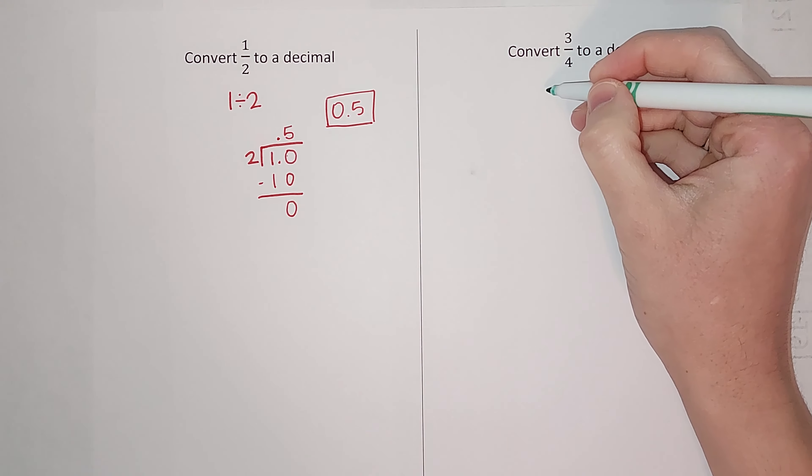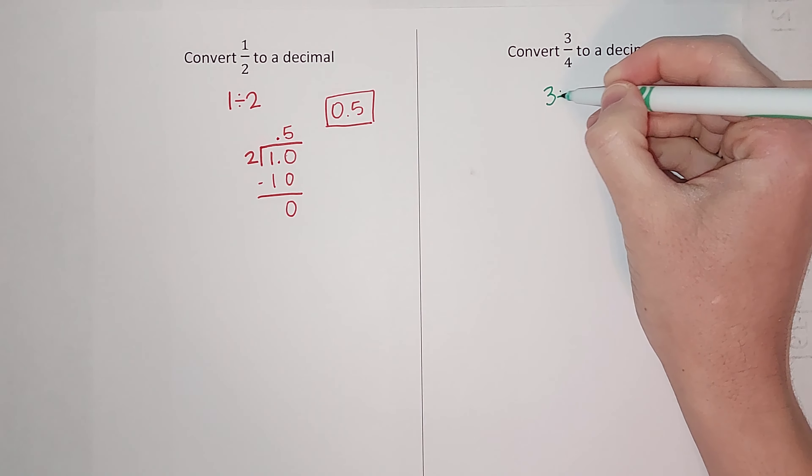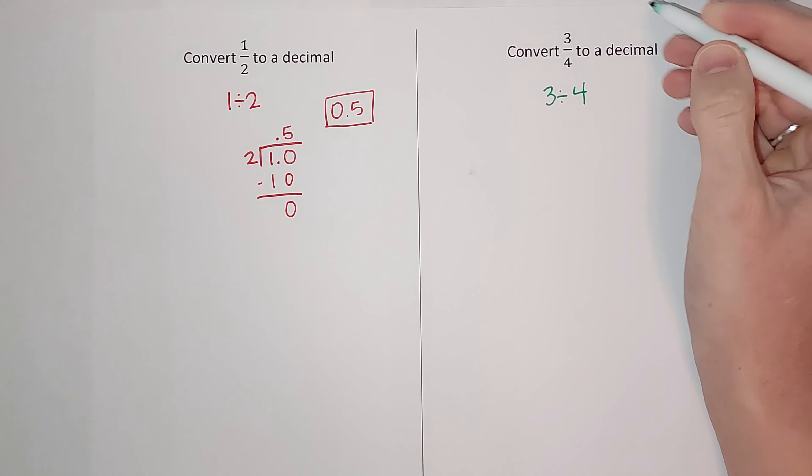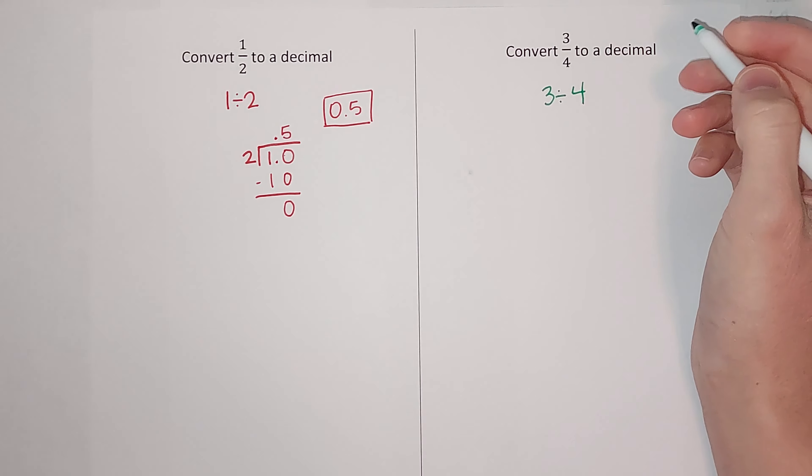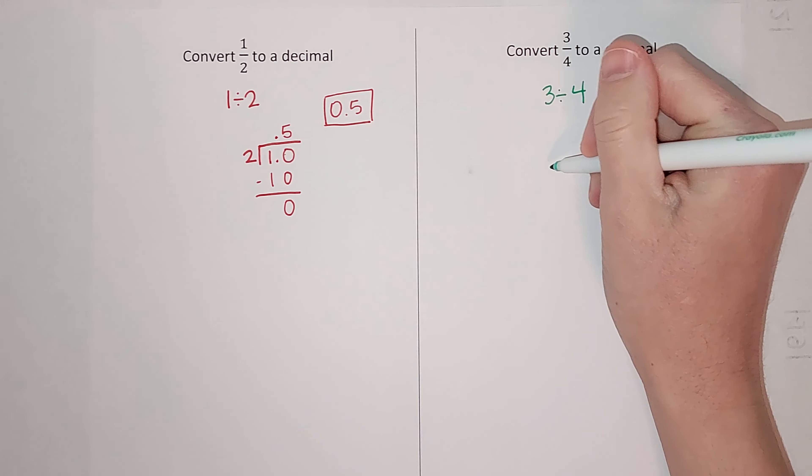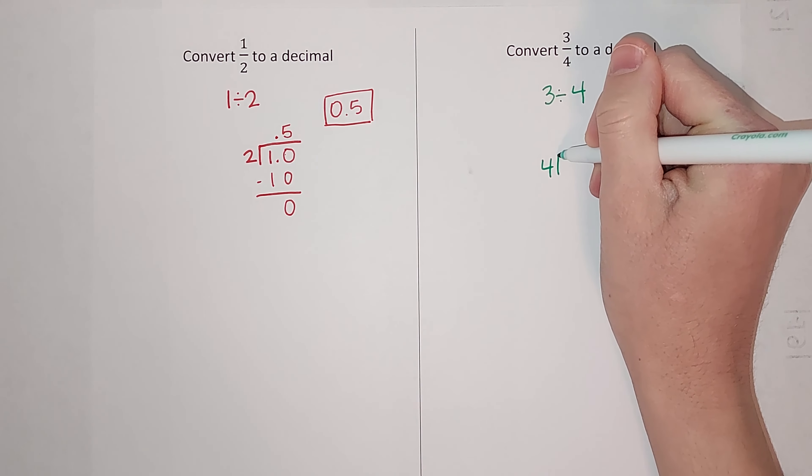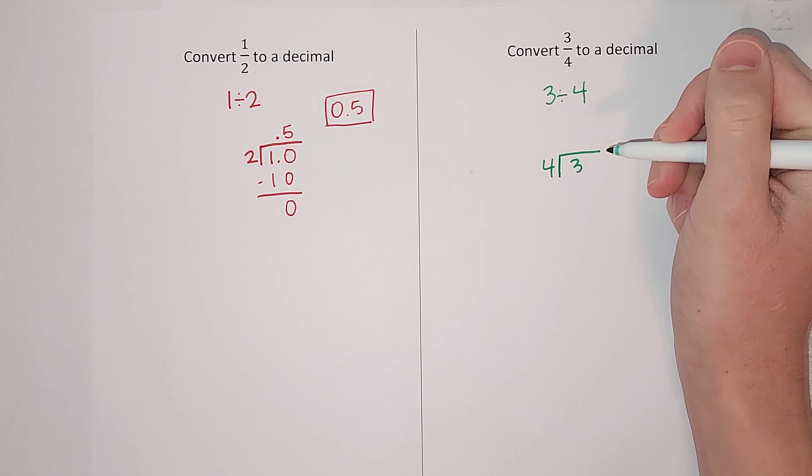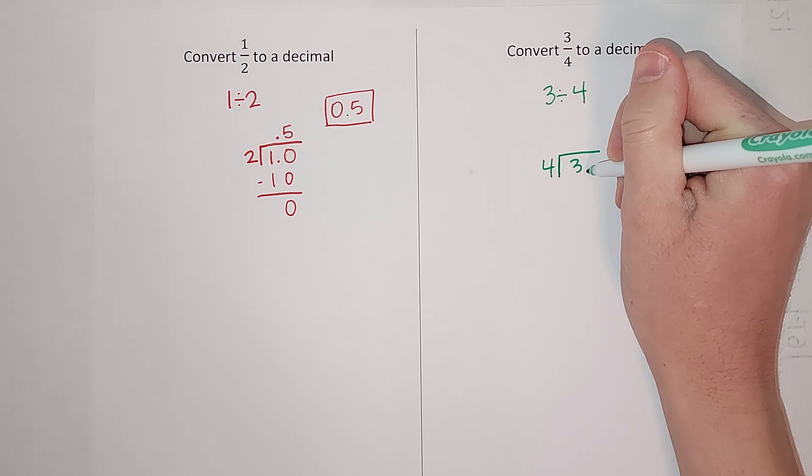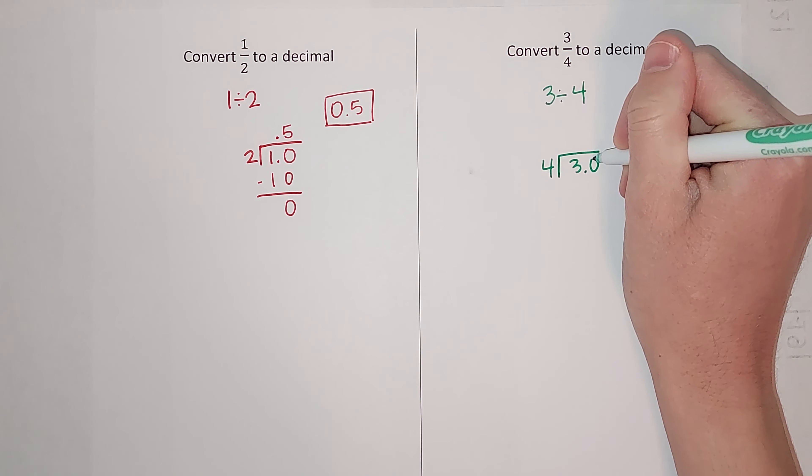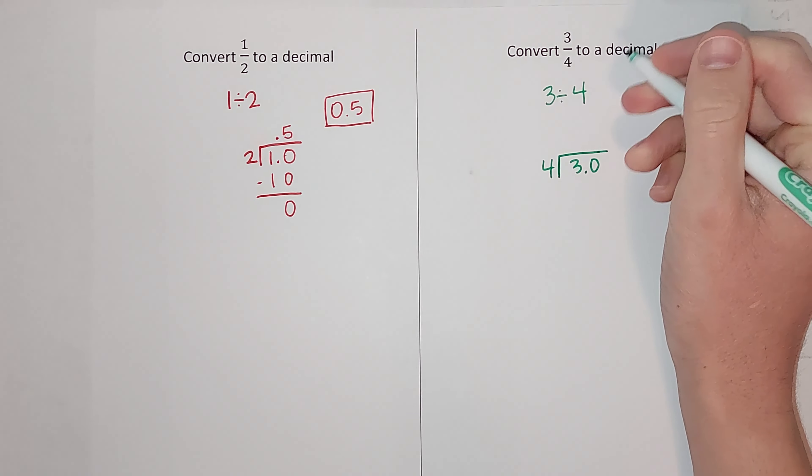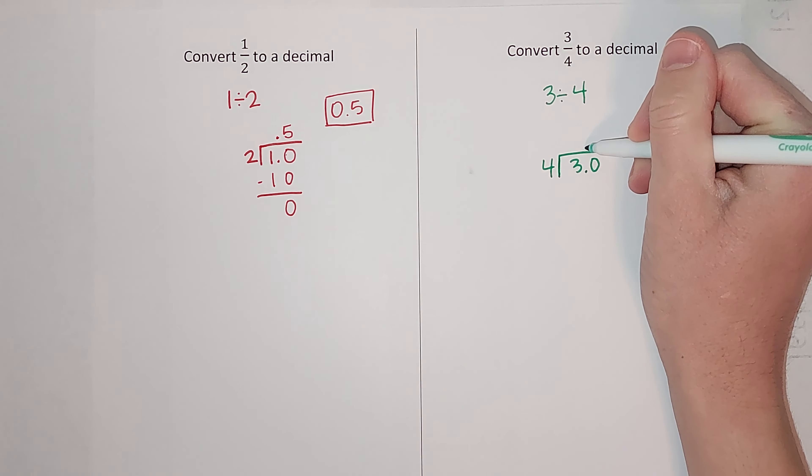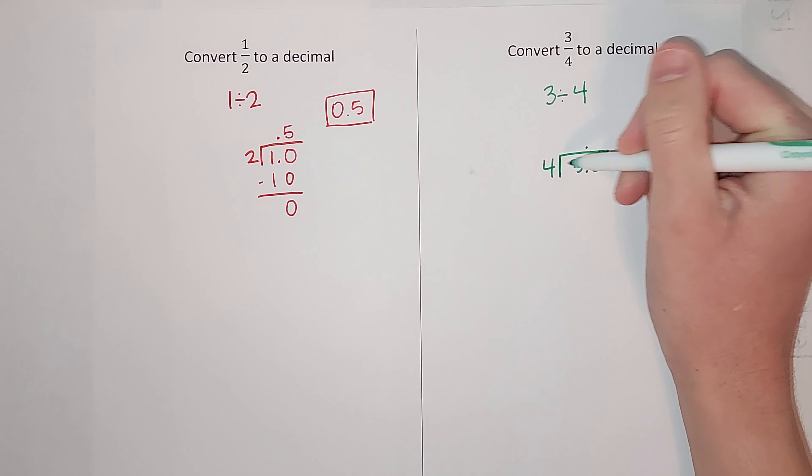All right, so remember three over four is the same as three divided by four. If I do that long division ways, it's gonna be four with three inside my box. Again, four doesn't go into three, so we're gonna turn it into 3.0 which is the same. So now we put our decimal up here.